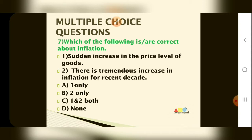Sudden increase in the price level of goods is called inflation. Question number 7: which of the following is correct about inflation? Statement 1: sudden increase in the price level of goods. Statement 2: there is a tremendous increase in inflation for recent decades.